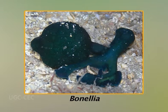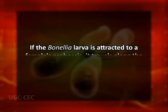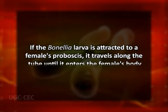Now, coming to location-dependent sex determination. The sex of the echiuroid worm Bonellia depends on where a larva settles. If a Bonellia larva lands on the ocean floor, it develops into a 10 cm long female. However, if the larva is attracted to a female's proboscis, it travels along the tube until it enters the female's body, where it differentiates into a minute 1–3 mm long male that is essentially a sperm-producing symbiote of the female.